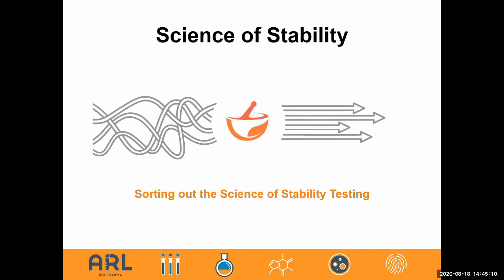Moving from the regulatory aspect to looking more at the science — it seems like everything is entangled. There are a lot of thoughts, ideas, and terms, and the nomenclature can be a little confusing. The goal of today's discussion is to sort it out and give some order, structure, and control to it, so hopefully through this talk we can sort out some of the science of stability testing.